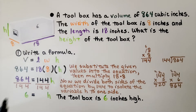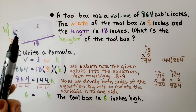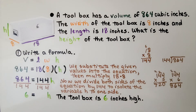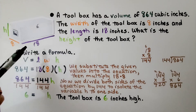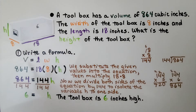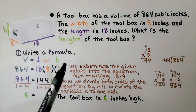Here we have an aluminum toolbox. The toolbox has a volume of 864 cubic inches. The width is 8 inches and the length is 18 inches. What is the height of the toolbox? We write the formula: V is equal to length times width times height.